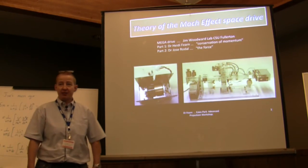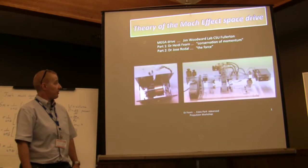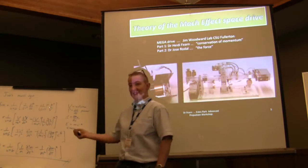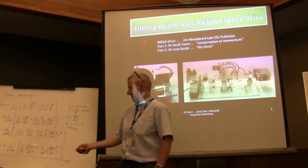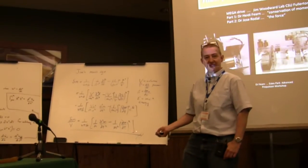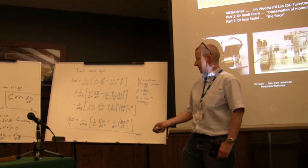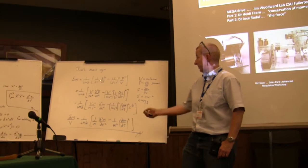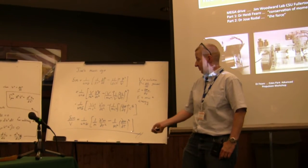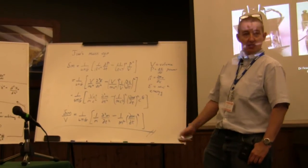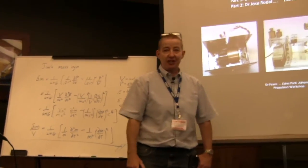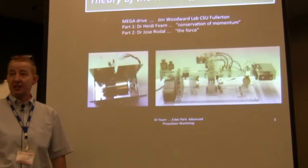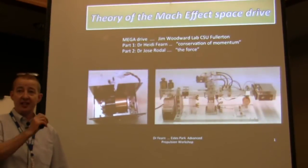This is part one. I'm going to finish around 2:15 and then Jose Rodell is going to start from the mass equation. This is the infamous delta M equation that Jim derives. I'm going to show you this derivation from a completely different viewpoint, and show you where it comes from from Hoyle-Narliker theory — literally directly from the field equations.